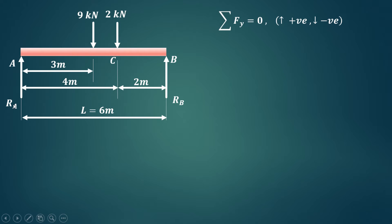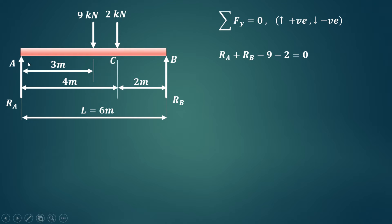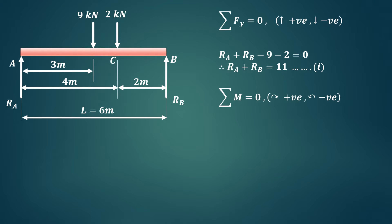Now we will find the reactions RA and RB. The first condition of equilibrium is summation of forces in the y-direction equals 0. Upward forces are considered positive and downward forces are negative. So RA and RB are positive, while the 9 kN and 2 kN loads are negative. Therefore RA + RB = 11 kN.